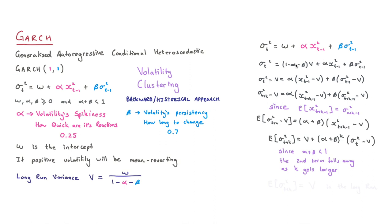And then we're going to see alpha V can be combined with this term over here. And that's how we're getting α(x_t-1)² - V + β(σ²_t-1 - V).